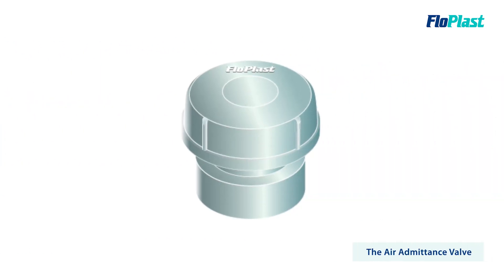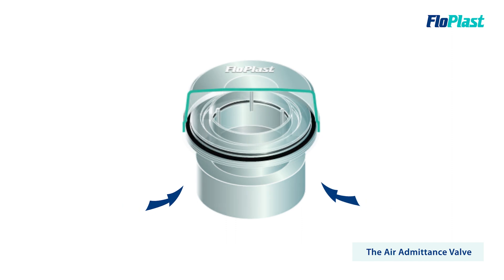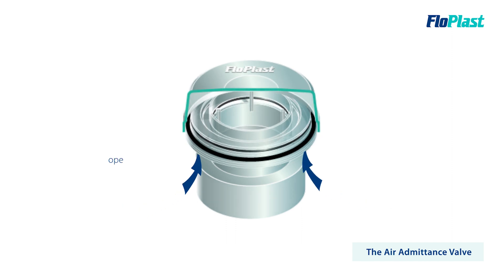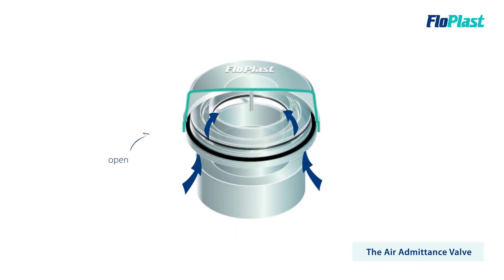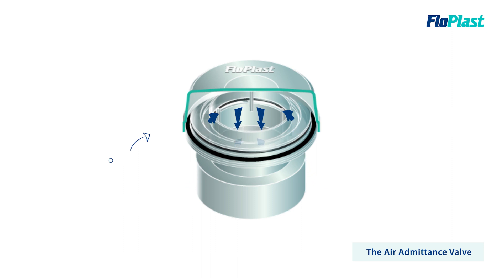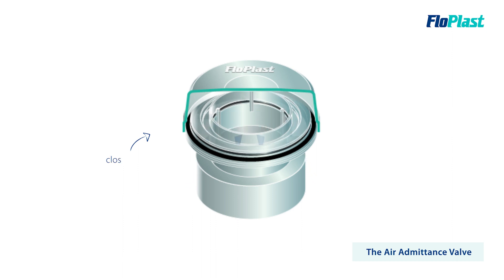The solution is the air admittance valve. As negative pressure occurs, the valve opens to allow air into the pipe. Once the pressure balance is corrected, the valve closes again. This allows air to be drawn in when required but prevents unwanted odours from escaping.